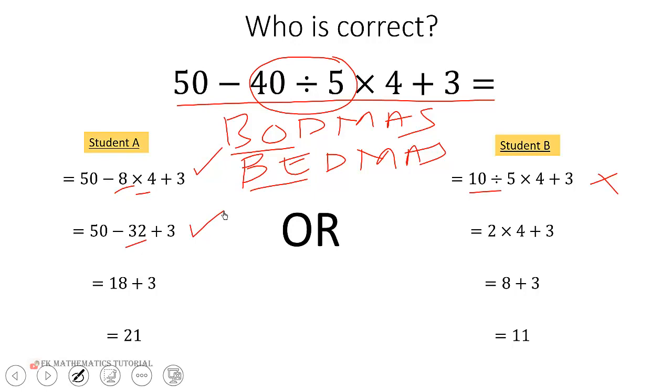Then the next thing you're supposed to do is addition and subtraction from left to right. So you subtract 50 and 32 and that will give you 18, and 18 plus 3 will give you 21. So this Student A is correct.